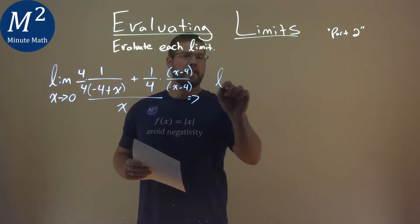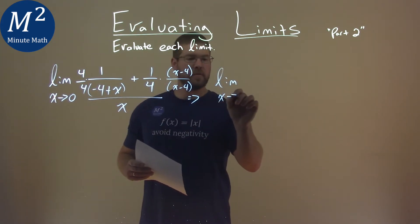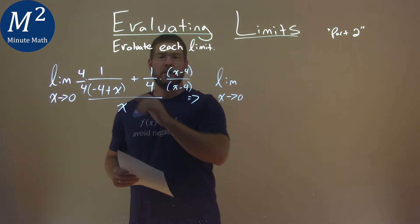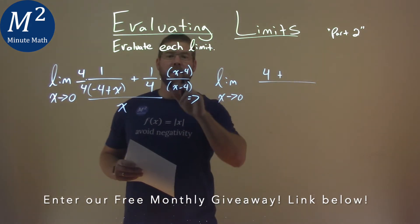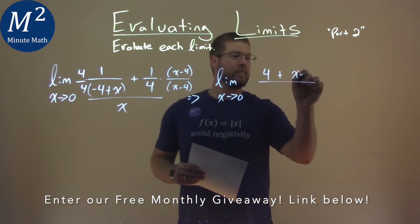So let's take that limit, move the limit here, as x approaches 0. And on the numerator, we have 4 plus 1 times x minus 4, which is x minus 4.